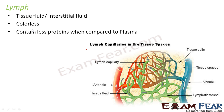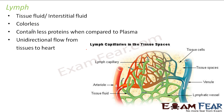In lymph, the flow is unidirectional — from tissues to the heart. Blood flows in both directions: from the heart to different parts of the body, and back from the body to the heart. But lymph flows only from the tissues to the heart. The function of lymph is to collect the proteins, blood cells, and plasma that enter the intercellular spaces, and then return all these substances to the heart.